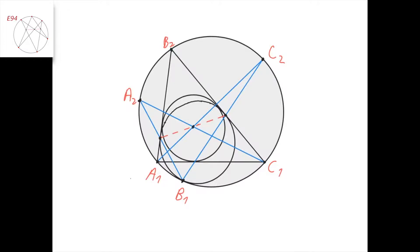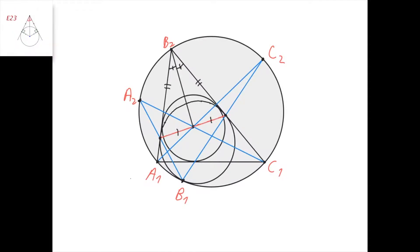We get that the intersection point of A1B2 and B1A2 (this point), the intersection point of A1C2 and C1A2 (this point), and the intersection of B1C2 and C1B2 (this point) — these three points lie on a straight line, which is exactly what we needed to prove: that the incenter of the triangle lies on the line defined by the two tangency points.